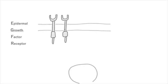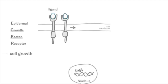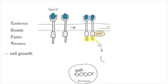The Epidermal Growth Factor Receptor, EGFR, is located at the cell surface. It's a growth factor receptor, which means it stimulates cell growth. The binding of a ligand activates the receptor, induces phosphorylation of intracellular substrates, and results in cell growth and DNA synthesis.